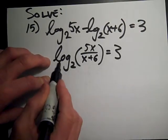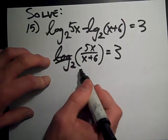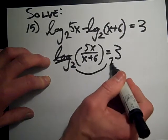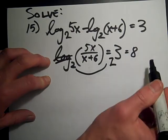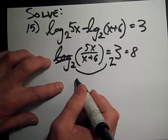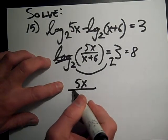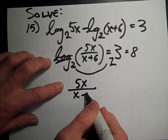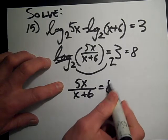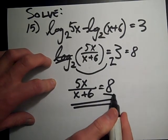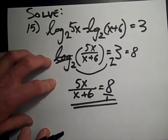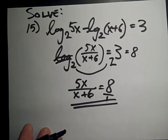then you remember we can get out of log mode by canceling the log and bringing the 2 over as our base. 2 to the 3rd equals 8. So now I've got a simple algebraic: 5x over x plus 6 is equal to 8. All right. And you don't need me to show you how to solve that. Put it over 1, cross multiply and solve, and you'll get an answer. All right. That's how you do those.